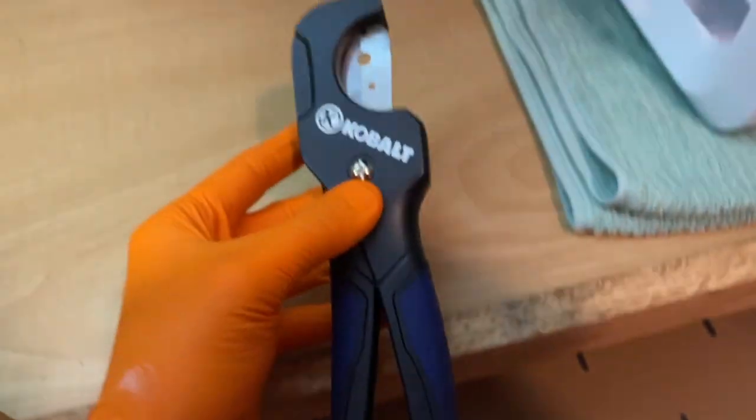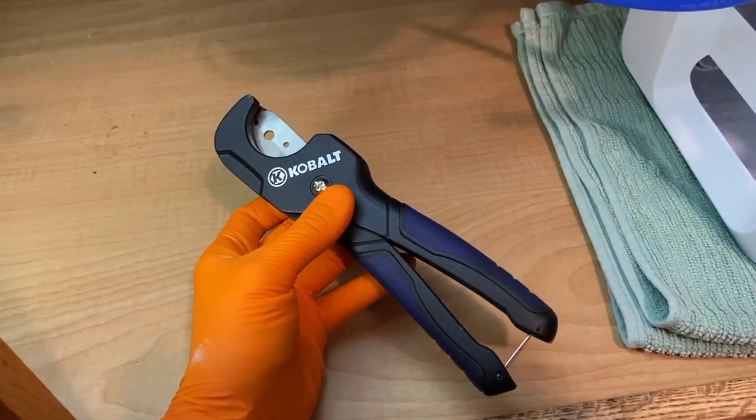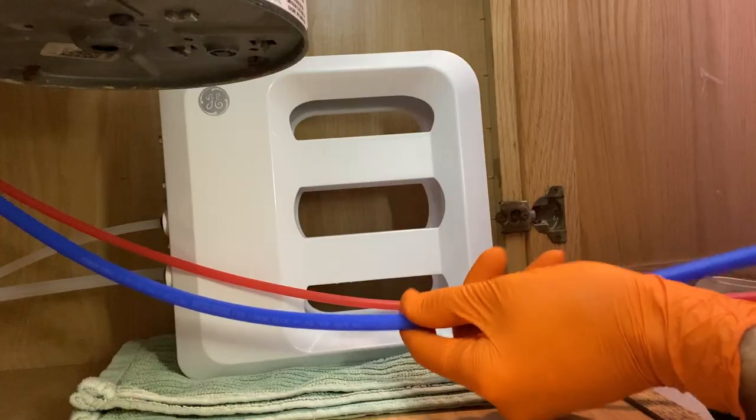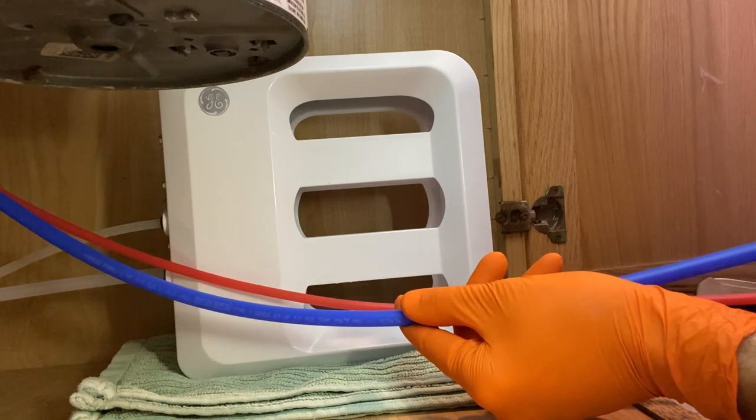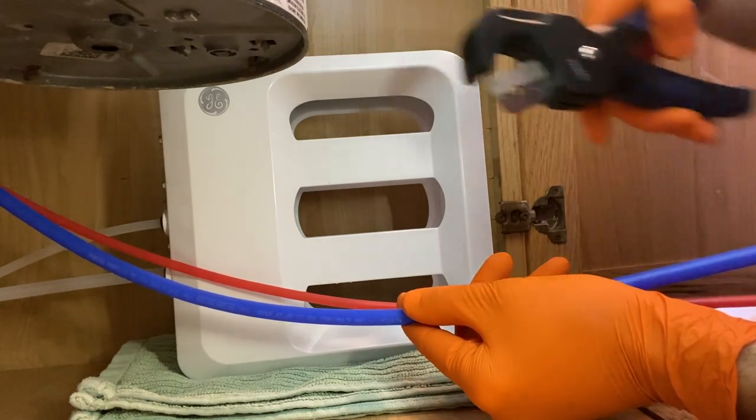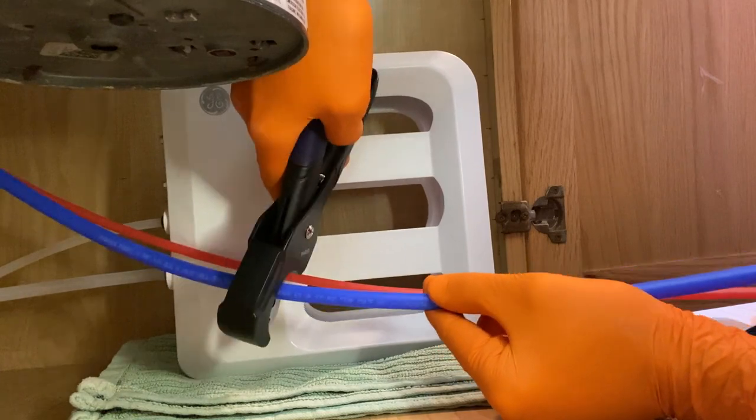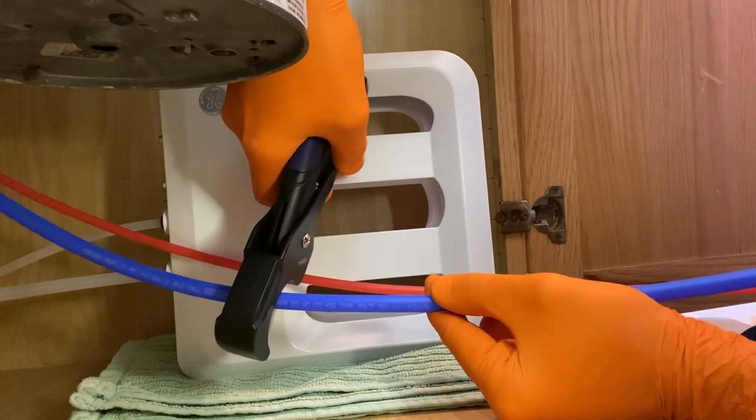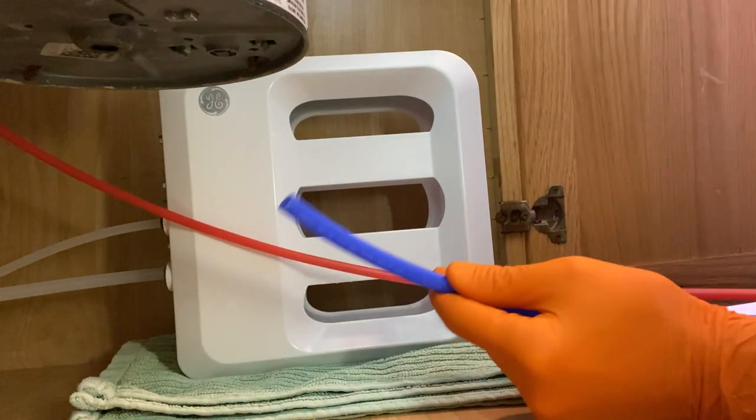Definitely check out the link down below in the comment section as well as the description section to purchase one of these. I'll start with the blue line. Again, I want a little bit of play, however I don't want it sagging and looping in any way. So come in and best to cut long first and adjust, as opposed to cutting too short and not being able to adjust. Check that out, a clean cut.